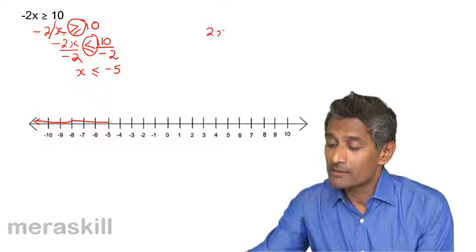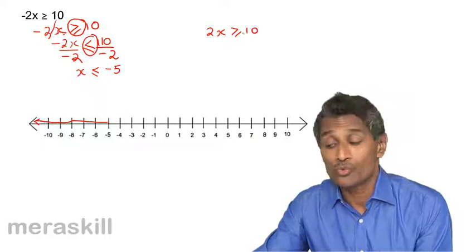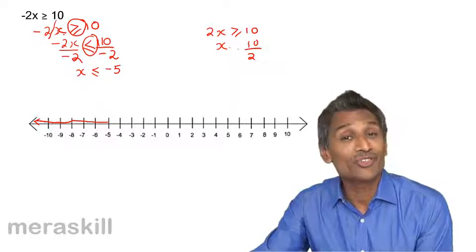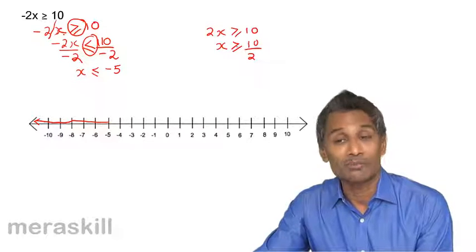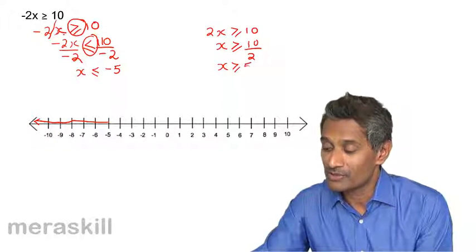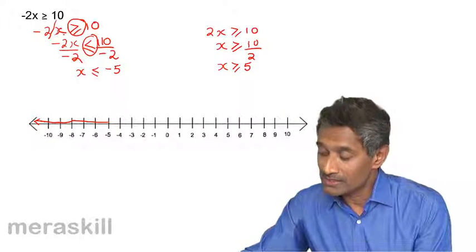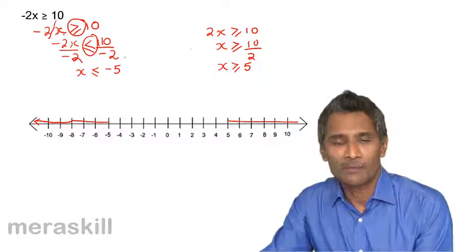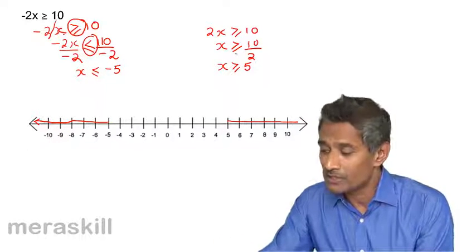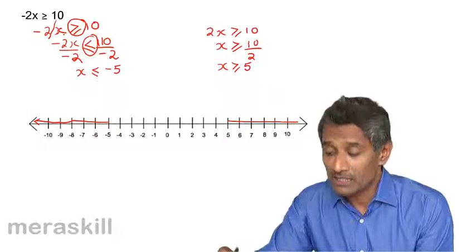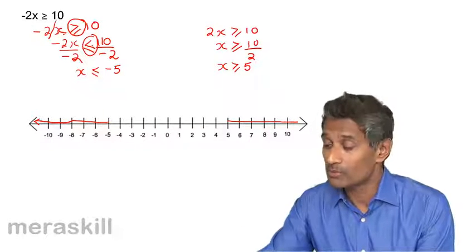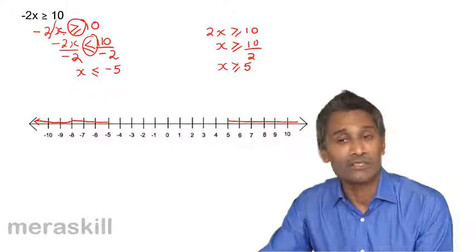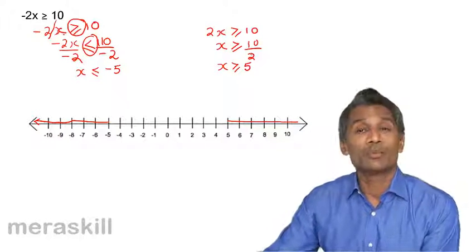Compare this with the case 2x ≥ 10. Here we divide both sides by 2, a positive number, so the inequality is maintained. We get x ≥ 5, and on the number line we start from 5 and move to the right. These two almost opposite examples clearly show: dividing by a negative number flips the inequality from greater than or equal to, to less than or equal to; dividing by a positive number retains it.